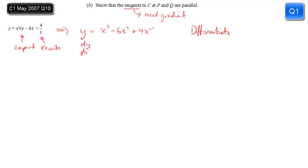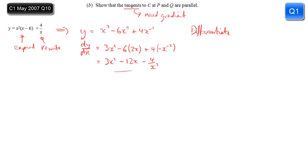Differentiating: dy/dx is going to be 3x squared minus 6 times 2x, and then plus 4 times minus 1 times x to the minus 2, reducing the power by 1. Tidying that up, we get 3x squared minus 12x minus 4 over x squared. Now we use dy/dx to work out the gradient at these points.